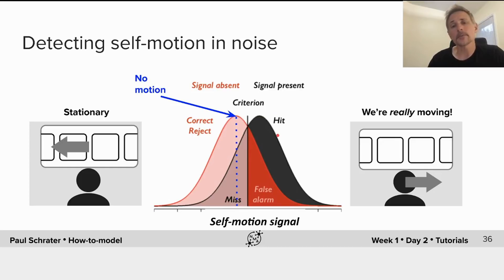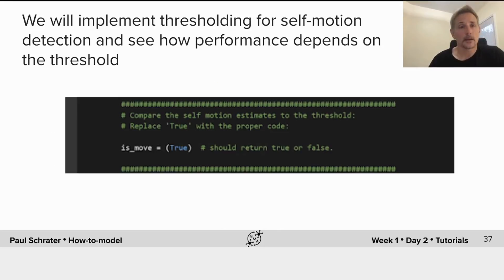To optimally distinguish these, we can use a criterion, a threshold such that when the vestibular signal is high enough to be above the threshold, our best guess is that we're really moving. And when it's below the threshold, the best guess is that we're not moving. We will implement thresholding for self-motion detection and see how this performance depends on the threshold in the next tutorial.